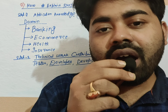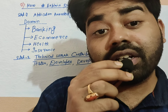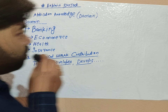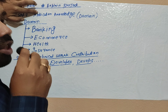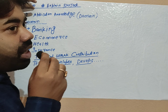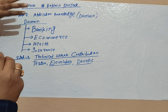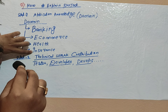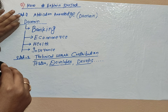Let's discuss this — I have made some notes so you guys will understand properly. First of all, domain knowledge — your application knowledge — is very important. If you are showing any application, you have to select a domain: banking domain, e-commerce domain, healthcare domain, or insurance domain.